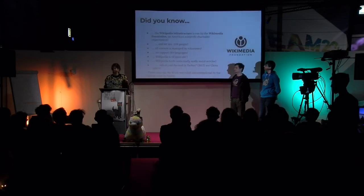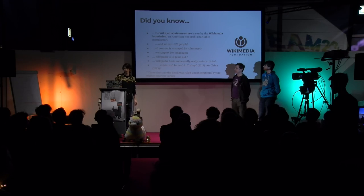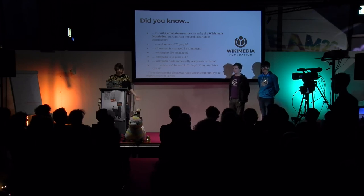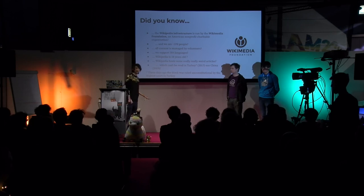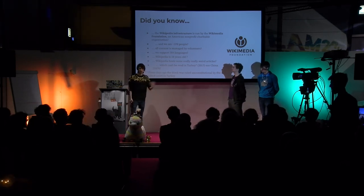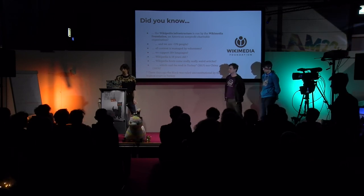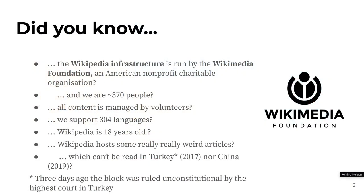First, some key facts. All of Wikimedia infrastructure is run by the Wikimedia Foundation, an American nonprofit charitable organization. We don't run any ads and we have only 370 people. Counting Wikimedia Deutschland and other chapters, it's around 500 people total — nothing compared to companies outside. All content is managed by volunteers; even our staff doesn't add content to Wikipedia. We support 300 languages, and Wikipedia is 18 years old — so it can vote now.